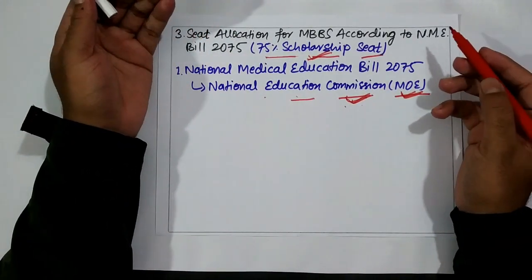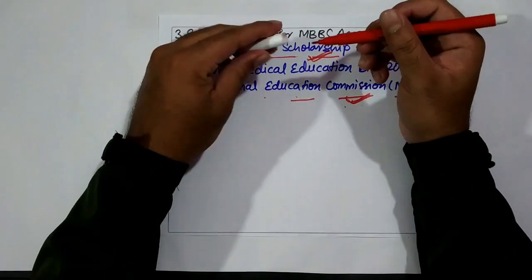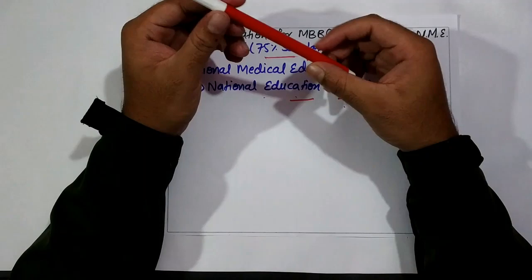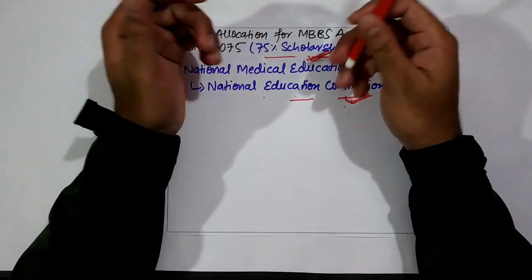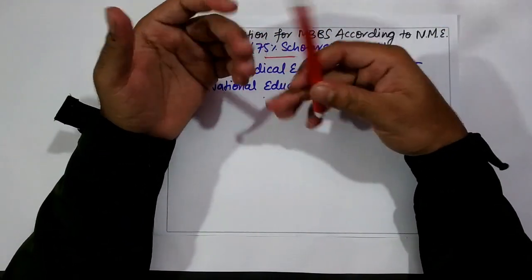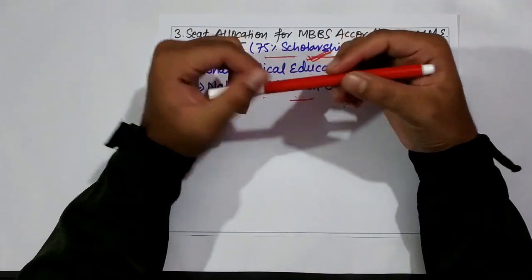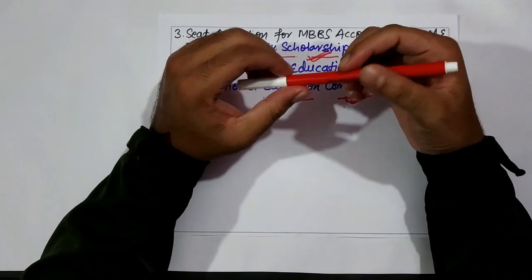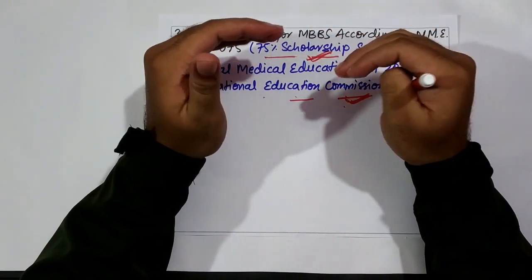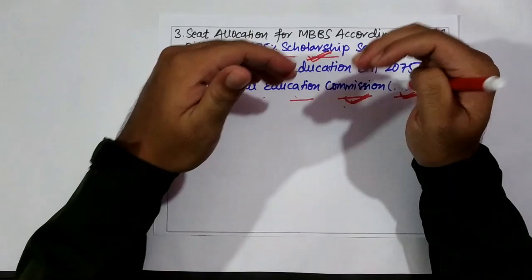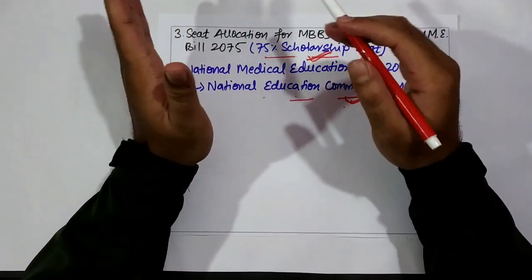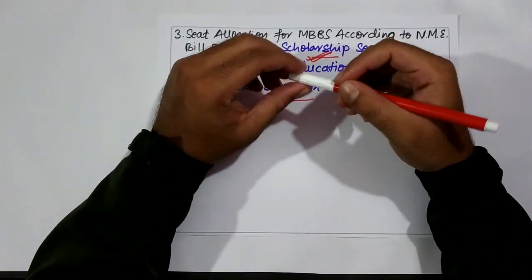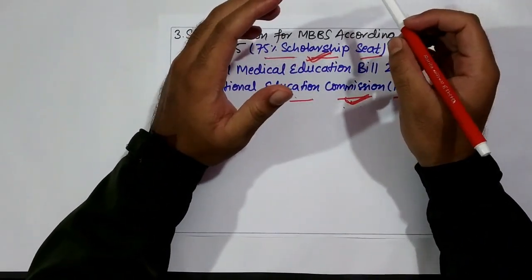The information is that the MOE has already formed the Commission, and the Commission has already allocated the 75% scholarship seats. But the question is: where is the official document? I searched the entire internet, social media, and government websites, but I didn't find any information about how many seats have been allocated to specific colleges or universities.